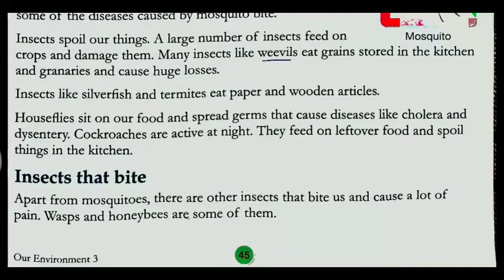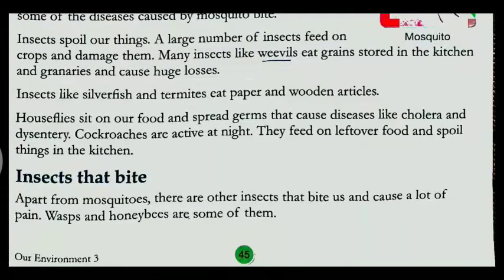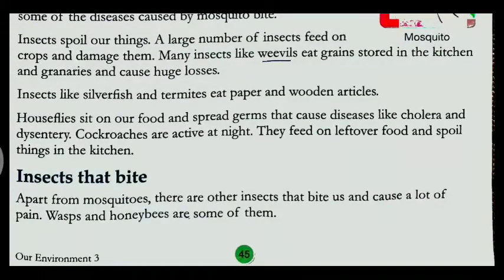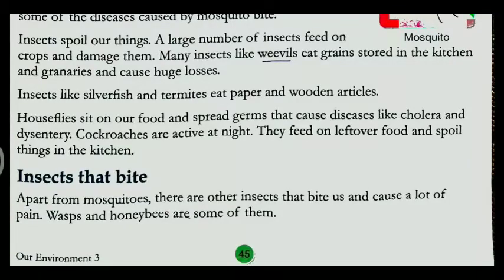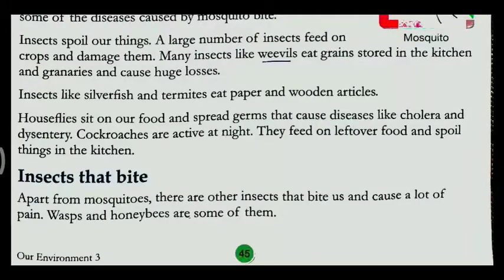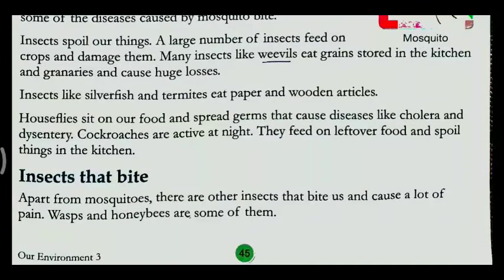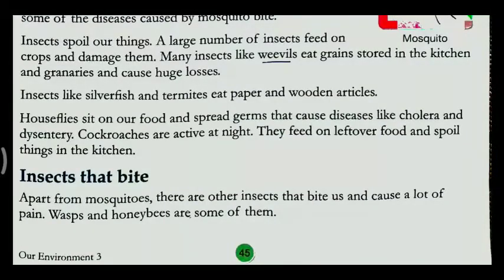Insects that dead bite — ab hum baat karengi un insects ki jo kaatne wali hoti hai. Jab woh kaatenge aapko to aapko bahut sara pain jhhelna padega. Woh hai aapke wasps, yaani ki jo tataiya hoti hai, honey bees, madhumakhi — ye sab kuch examples hai. Thank you students for watching.